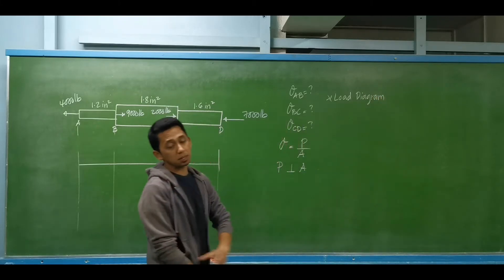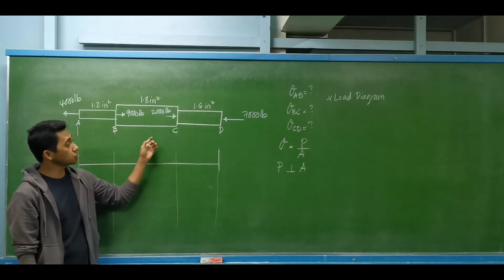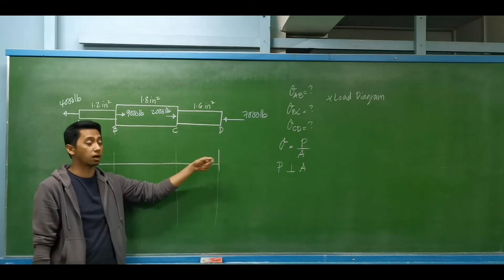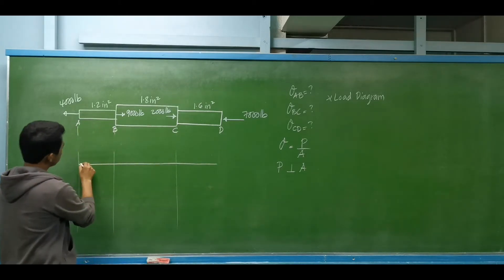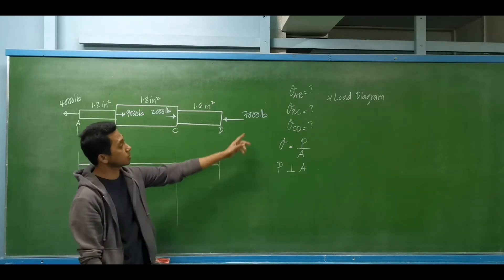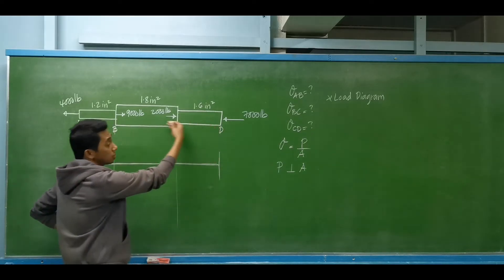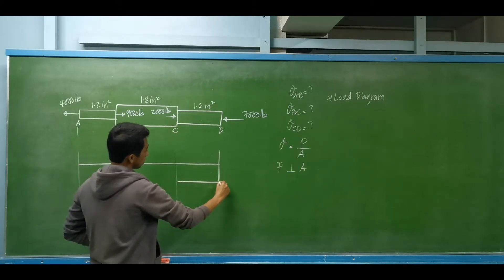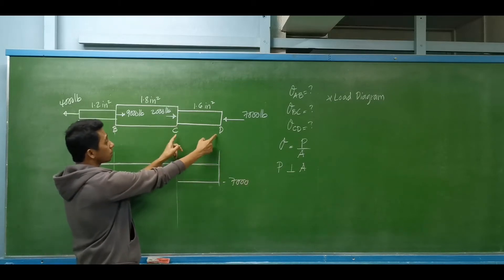We can use the load diagram to determine the actual axial force per segment. For this case, we may consider forces to the left to be negative and forces to the right to be positive. We start on the right end. At point D, we have 7,000 pounds to the left, so this is negative 7,000 pounds. That is for segment CD.